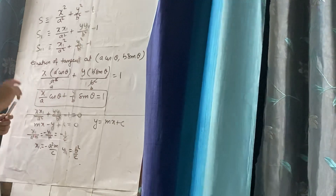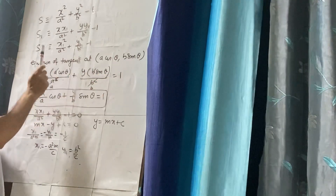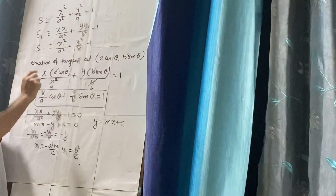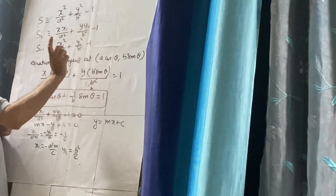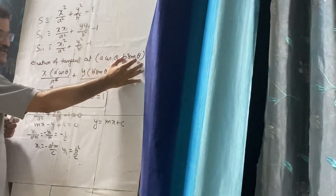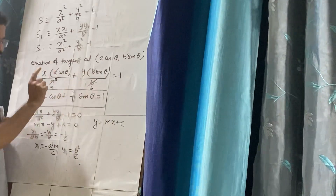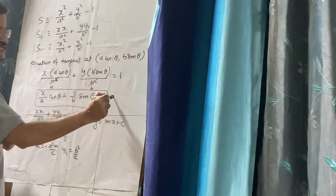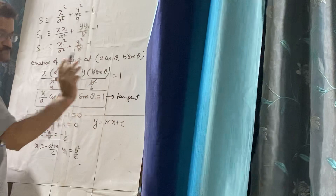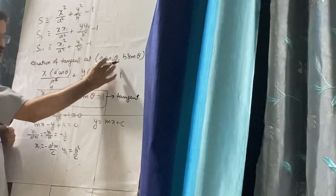Remember that the equation of tangent can be written in two ways. The equation of tangent at the point (a cosθ, b sinθ): you write S1 equal to 0, giving xx1 by a² plus yy1 by b² equal to 1. Then substitute x1 = a cosθ and y1 = b sinθ. This gives the equation of tangent at (a cosθ, b sinθ).